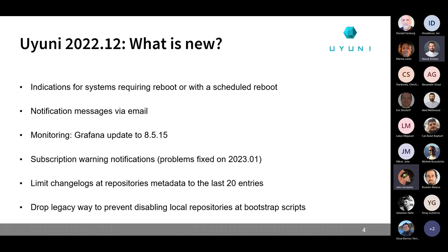For the December release, we now include on the system list and the systems view in the web UI more indications about the need for a reboot. That becomes especially important now that we are adding transactional systems such as SLE Micro, because when you install a new package you need to reboot the system for that package to become available. Users can also configure notifications to be sent not only to the web UI bell icon but also via email.